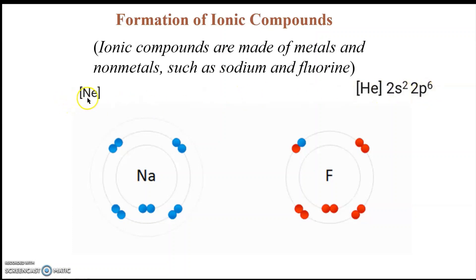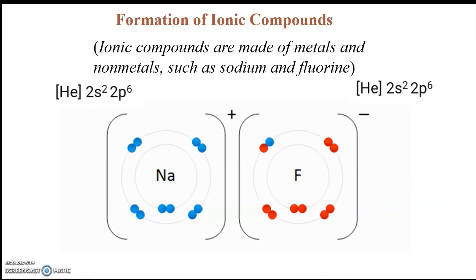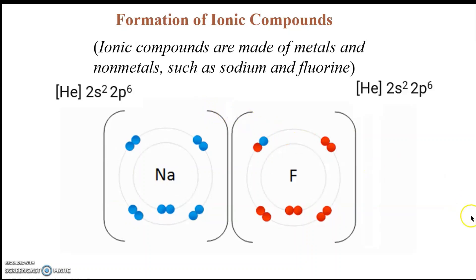It's formed a stable noble gas configuration over here also. Now, neon is usually written as electron configuration more like that. Also, since we've lost an electron and we've got an extra proton, we've formed charges, one charge here. We've got also a negative charge over here because of that extra electron.